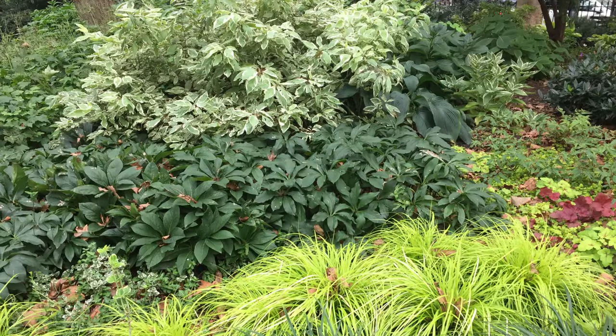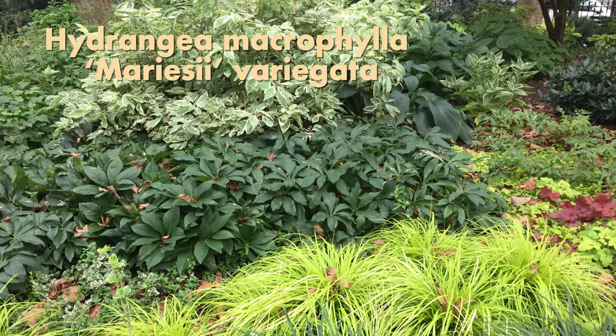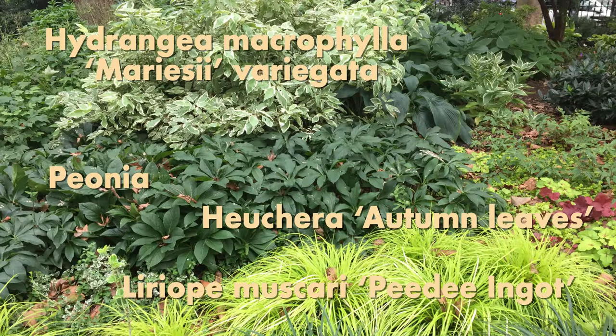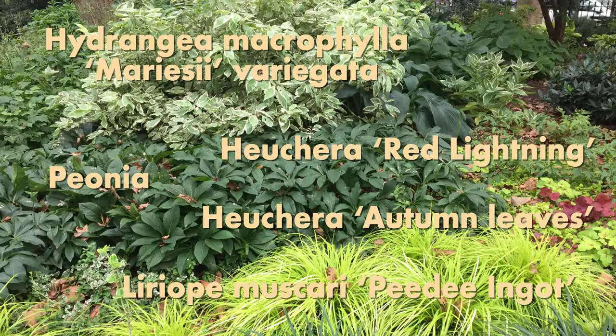Hi, in this video I will show you how to recreate this beautiful shade mix. I took a picture from Madison Square Park at the end of summer. So we have some Hydrangea macrophylla 'Mariesii Variegata', some Peonia, some Liriope muscari 'Pee Dee Ingot', some Heuchera 'Autumn Leaves', and some Heuchera 'Red Lightning'. I will give you the numbers of plants you need to recreate that same effect in your garden.